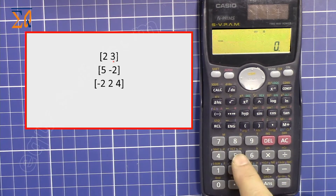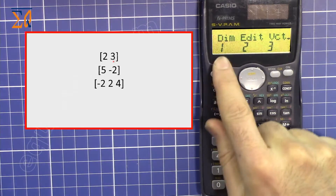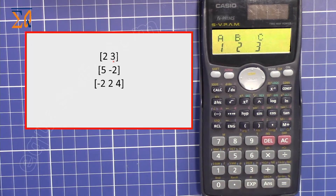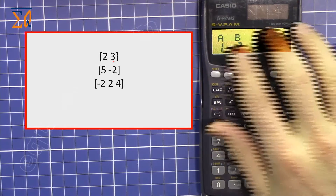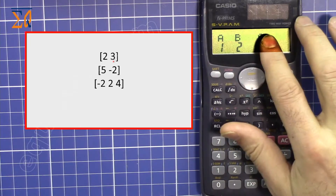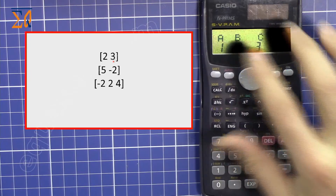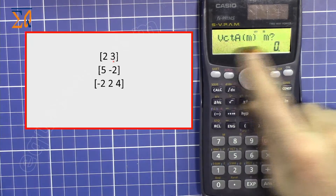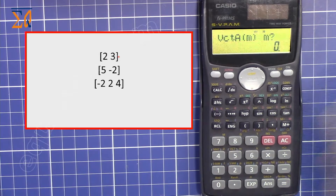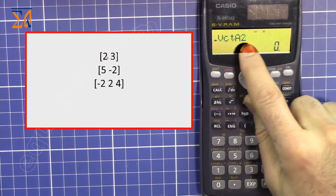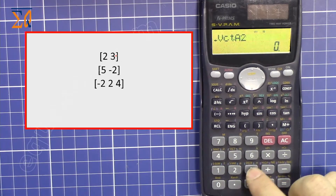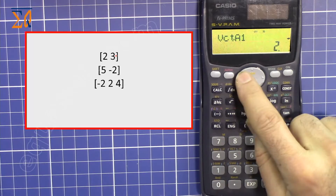To enter values, press SHIFT and 5 — you'll see VCT. Press 1 for the dimension option. It then asks which memory to store in: A, B, or C. We'll store in A, so press 1. Since this is two-dimensional, press 2 then equals. Enter A1 as 2, press equals, then A2 as 3, press equals.